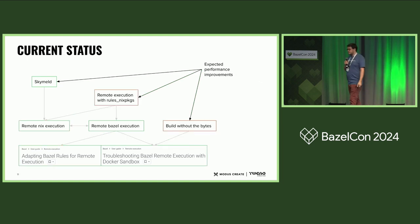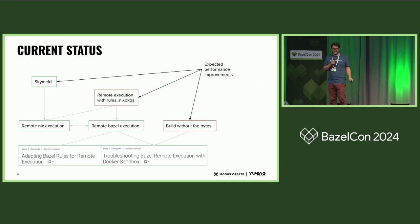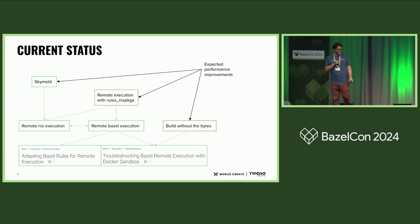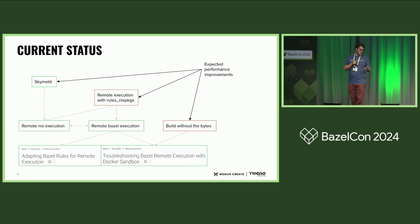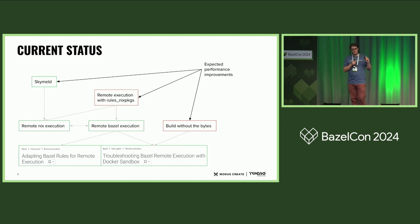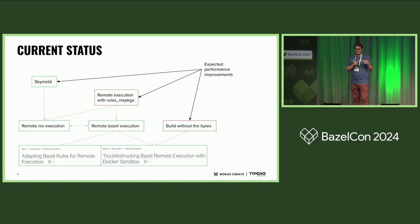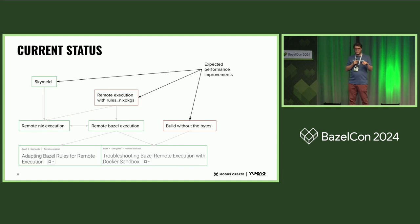The current status — just spoiling the end of the talk — is that SkyMeld works because we have remote Nix execution. Remote execution with rules-nix packages has a few things that need tuning to integrate remote Nix execution and remote Bazel execution correctly. It's working, but I won't say it's production ready. And build-without-the-bytes is kind of stuck on some features that will be addressed in Bazel 7.4.